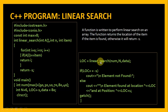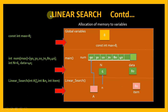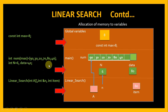So loc will receive either the index number if the element is found, or minus one if the element is not found. We check the value of loc: if it is minus one, the element is not found; otherwise it is present at location loc, and we say the position is loc plus one because the index starts from zero but we count positions from one. Now we will see the memory diagram, which is divided into three parts: global variables, main, and linear search.